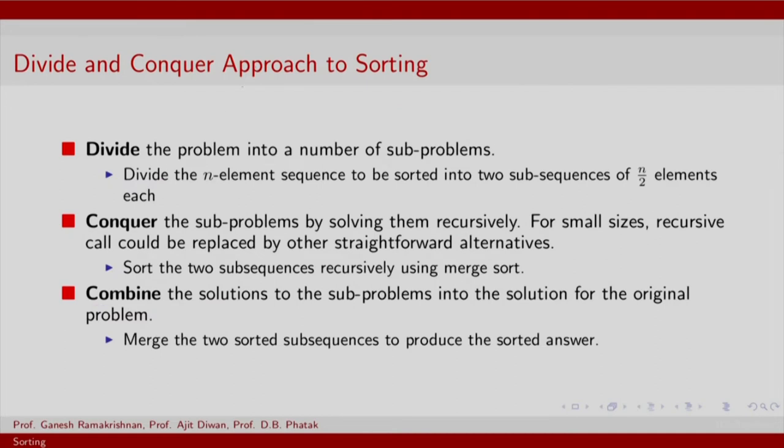In the case of divide and conquer for sorting, also called merge sort, the simplest implementation is the merge sort algorithm. You divide the n element sequence into two sub sequences of n by 2 elements each. Now it is not really necessary that the two parts be of the same size, but the simplest implementation says that we keep them of same size.